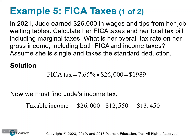In 2021, Jude earned $26,000 in wages and tips from her job waiting tables. Calculate her FICA taxes and her total tax bill including marginal taxes. What is her overall tax rate on her gross income including both FICA and income taxes? Assume she is single and takes the standard deduction. Step at a time: $26,000 is her gross income, and her FICA tax is at 7.65%, which is the FICA rate in 2021. So the amount Jude owes in FICA tax is $1,989. There have been no adjustments, so gross equals adjusted gross income. AGI minus the standard deduction gives taxable income, so Jude is only paying taxes on $13,450.